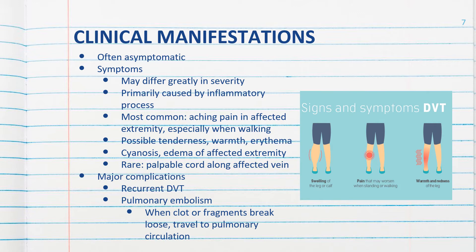The major complications of DVT are recurrent DVT and PE. PE occurs when fragments of the clot break loose from the vein wall. As the clot travels, it moves through progressively larger veins and into the right side of the heart, then enters the pulmonary circulation where it eventually occludes arterial blood flow to a portion of the lungs. This results in a mismatch between ventilation and perfusion, and the area distal to the clot becomes ischemic and infarcted — a pulmonary infarct.